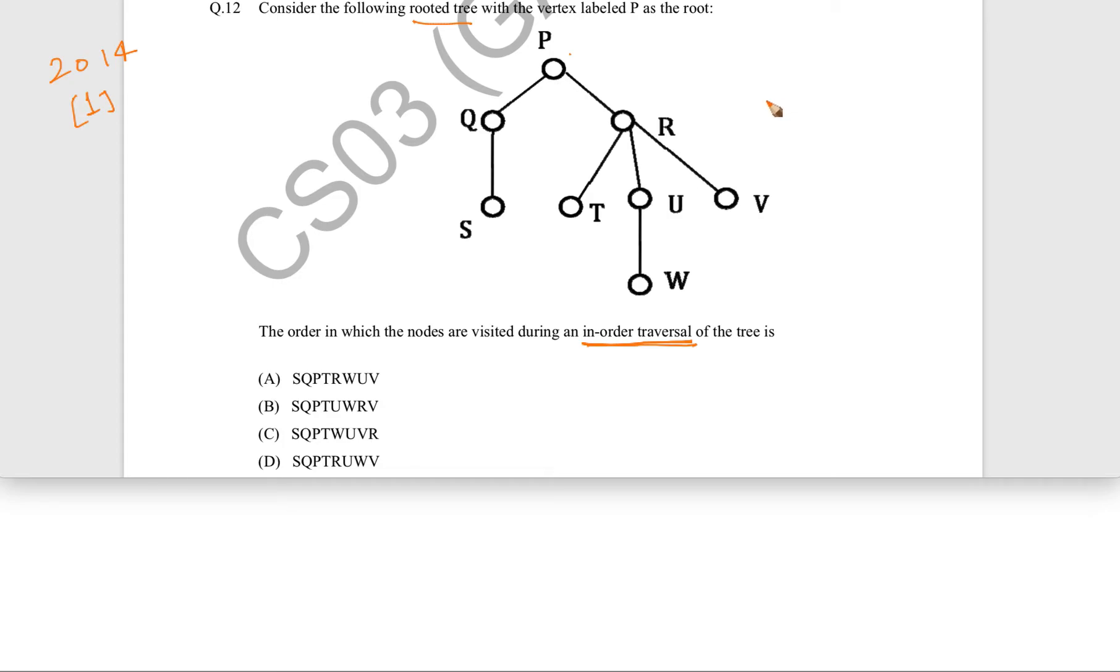Now, the in-order traversal of a ternary tree is defined as: left, then we go to root, then we go to middle, and then finally we go to right. So here, for example, firstly we will traverse left, then we will traverse root, then we will traverse middle, and then we will traverse right.